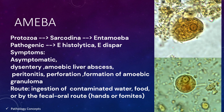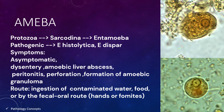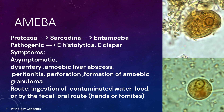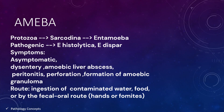The sub-kingdom is Protozoa, Sarcodina. The genus is Entamoeba. E. histolytica and E. dispar are pathogenic organisms. All others — Endolimax nana, Iodamoeba bütschlii, and others — are non-pathogenic organisms. The symptoms of non-pathogenic organisms are mostly asymptomatic.